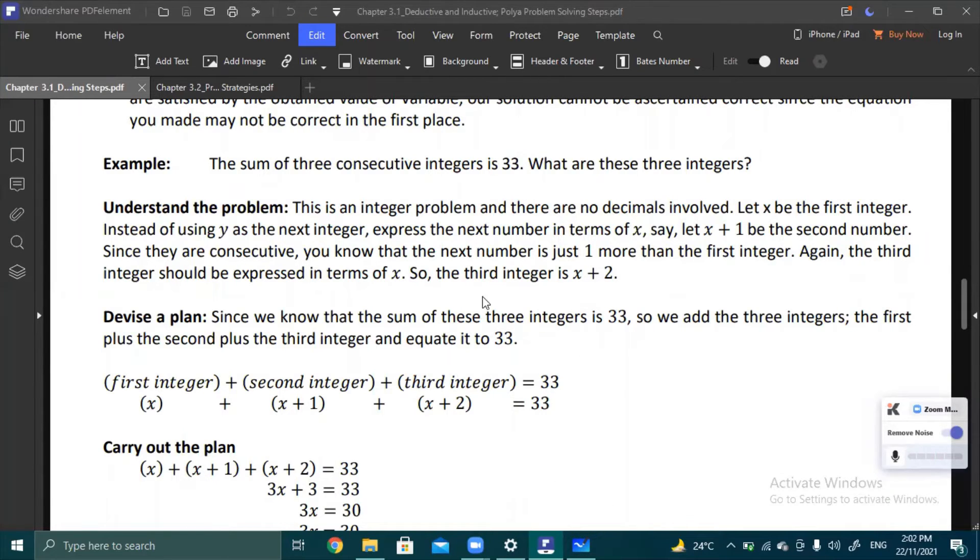For the next integer, you might want to use another variable y to represent the next integer. That's helpful. For the third number, you might want to use z. That's possible. But notice that your equation will be x plus y plus z is equal to 33. If you solve this, you'll struggle because you have three variables, so you won't obtain the specific value for any of the integers. It is logical to express the numbers in terms of only one variable.